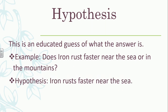My hypothesis here would be that iron rusts faster near the sea. There are a few important things about the hypothesis. One is that you must take a side — you were given two options, by the sea or by the mountain, and you need to choose one. It doesn't matter which side you choose; the important thing is that you take a side. The other thing is that your hypothesis must be provable or testable. Those are the two key requirements.